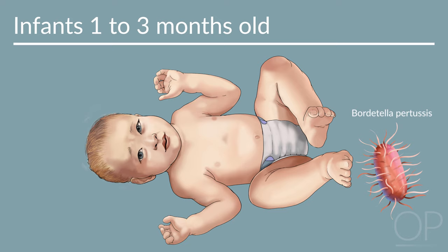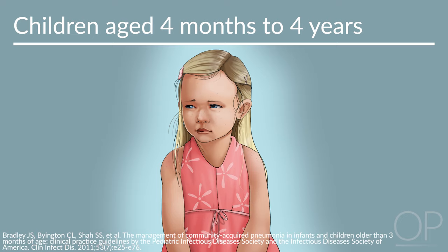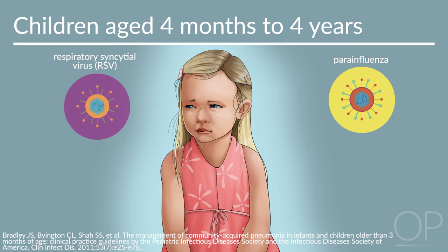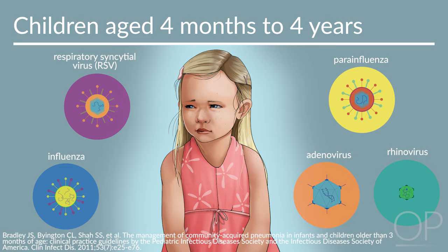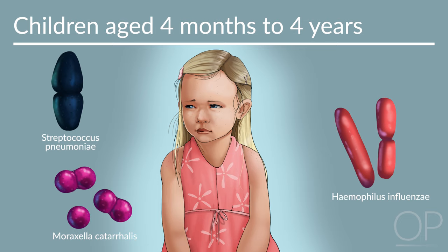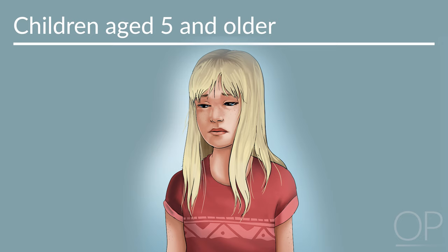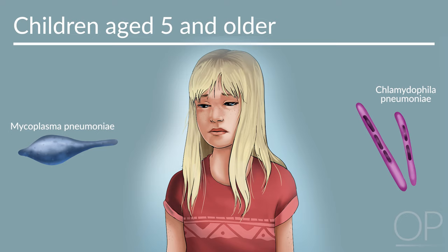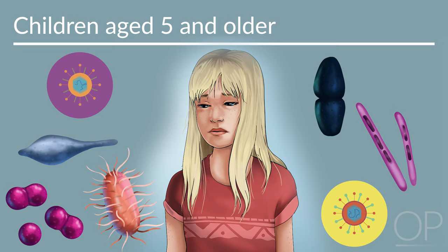Afebrile pneumonia of infancy can also be seen in the 1–3 month age group and is classically due to Chlamydia trachomatis acquired during vaginal delivery. Bordetella pertussis should also be considered due to increasing incidence and significant morbidity and mortality; an infant with Bordetella pertussis may or may not have a fever. Viruses remain the most common pathogens among children aged 4 months to 4 years — most commonly RSV, followed by parainfluenza, influenza, adenovirus, and rhinovirus. Up to one-third of children have a co-infection with two or more viruses. Bacterial pneumonia may be caused by Streptococcus pneumoniae, Haemophilus influenzae, and Moraxella catarrhalis. Among children aged 5 and older, atypical organisms such as Mycoplasma pneumoniae and Chlamydophila species are common, though viral and typical bacterial organisms may also be causative.